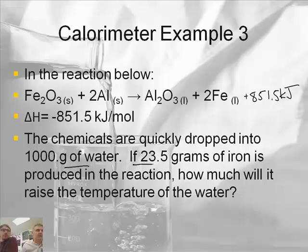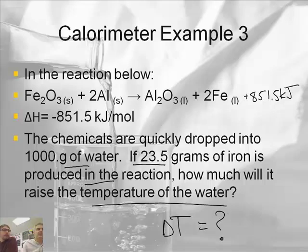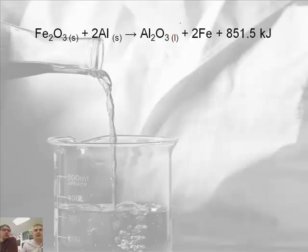So that's the question. Now, here, the chemicals are quickly dropped into 1,000 grams of water. If 23.5 grams of iron is produced in the reaction, how much heat, how much will it raise the temperature of the water? Okay. So we want to see how much the temperature goes up. Right, so we're solving for delta T. So delta T is the question mark, right? All right, so let's see if we can do that. Okay. So let's go to another screen here. Here's our reaction.